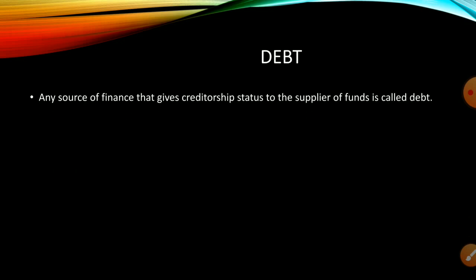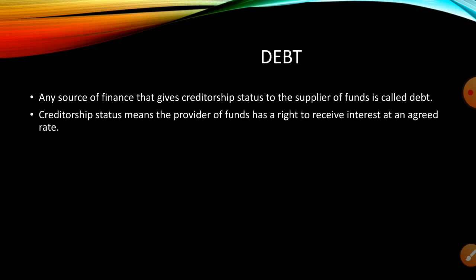Any source of finance that gives creditorship status to the supplier of funds is called debt. Creditorship status means the provider of funds has a right to receive interest at an agreed fixed rate. If the company fails to pay that interest, the provider of funds can take legal action against the company as per the lending agreement. In case of debt, payment of interest is compulsory irrespective of the profit earned by the company.